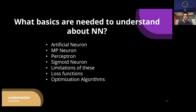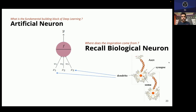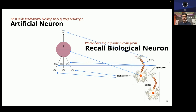The basics needed to understand neural networks are: MP neuron, perceptron, sigmoid neuron, their limitations, loss functions, and optimization algorithms. The artificial neuron originates from the biological neuron. In the biological neuron, inputs correspond to dendrites, synapses correspond to weights, the soma corresponds to the pre-activation function, and the axon corresponds to the activation function — the output that gets transferred to the next neuron.